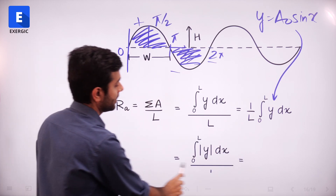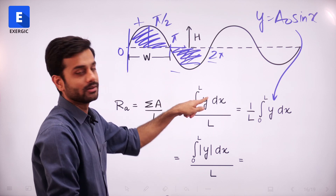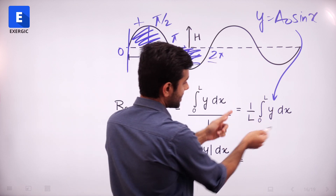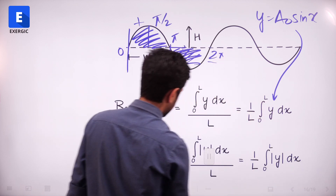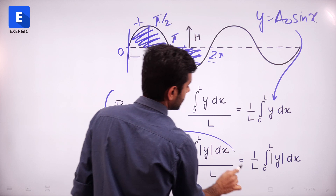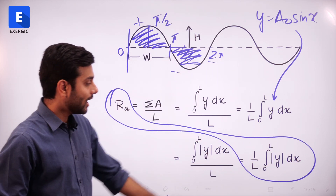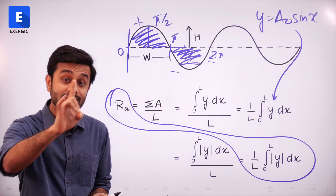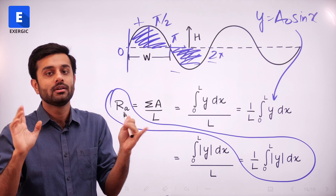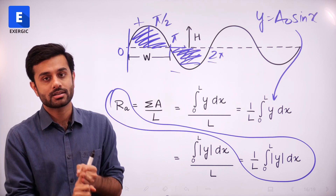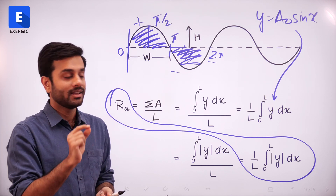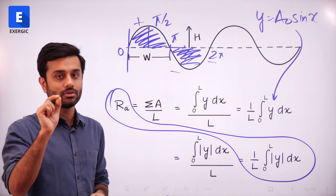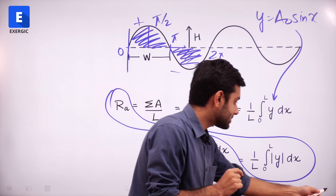You must put a modulus — absolute value — here. The RA formula requires the arithmetic mean of the absolute value of area: RA = (1/L) × ∫|y| dx. The modulus ensures you are always taking positive values. This was the first possible mistake — forgetting the mod. The second mistake is the integration range: from where to where you integrate, and what value of L you are considering.